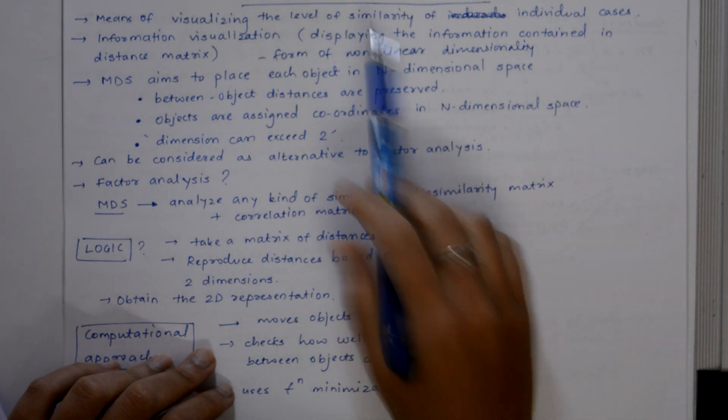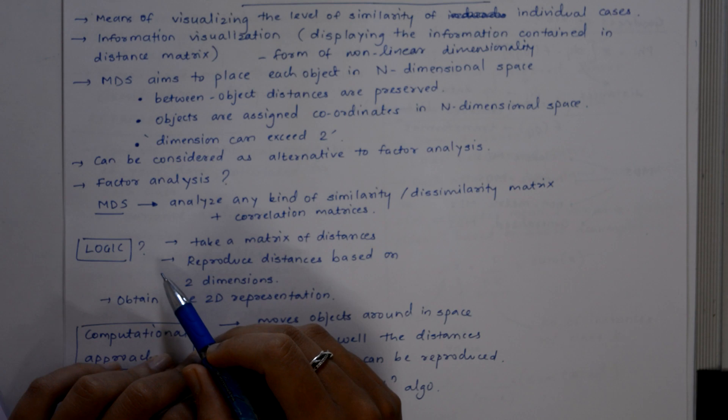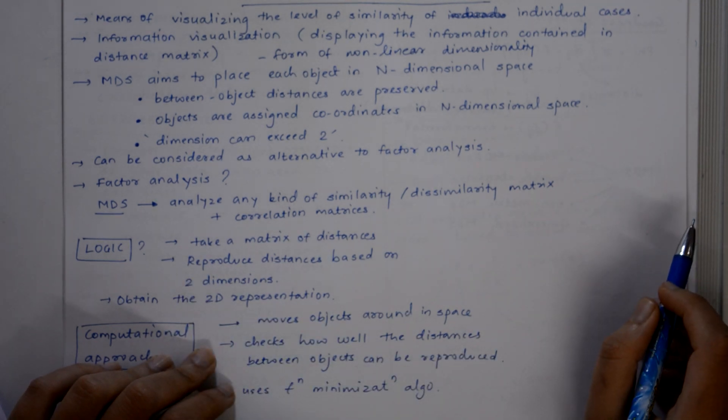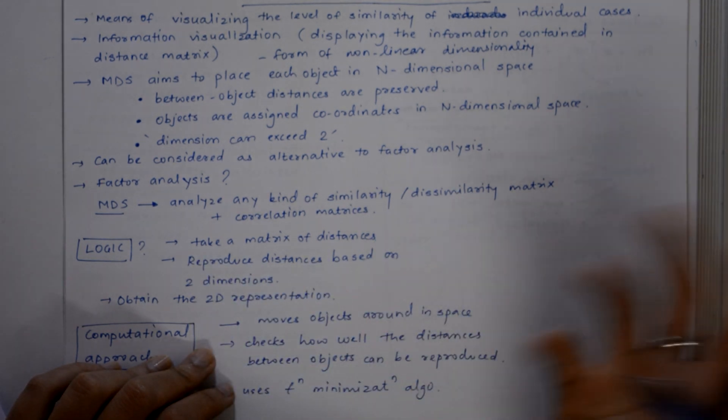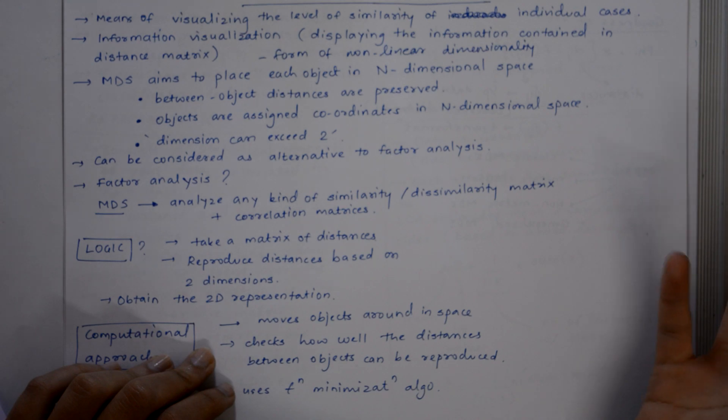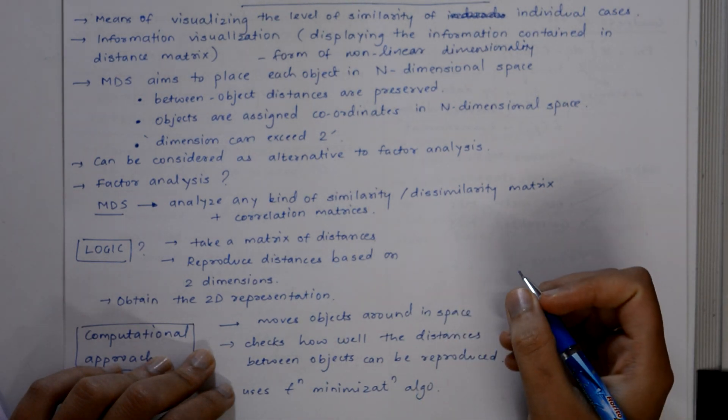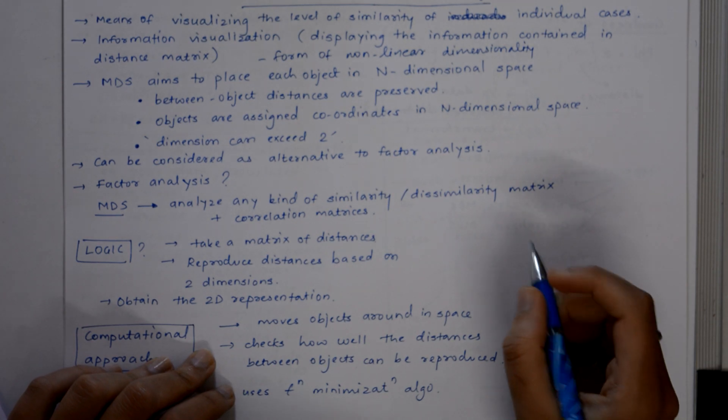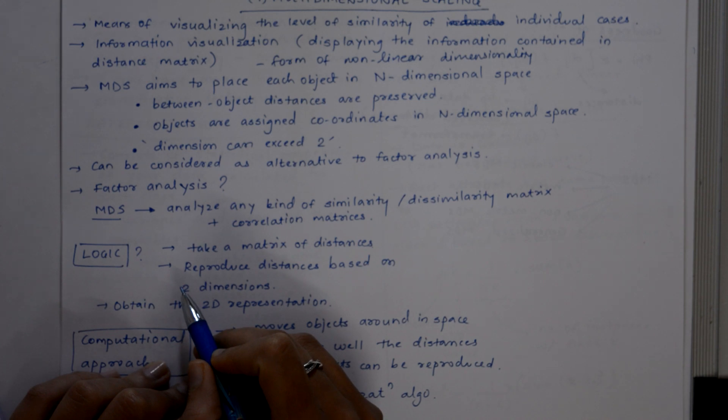What is the logic behind multidimensional scaling? Suppose we take a matrix of distances between major cities of the US from a map, and we then analyze this matrix, specifying that we want to reproduce the distances based on 2 dimensions.